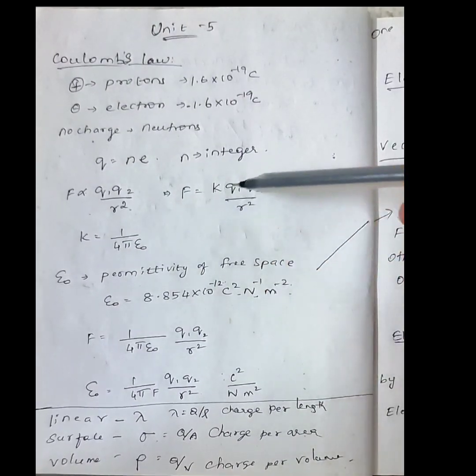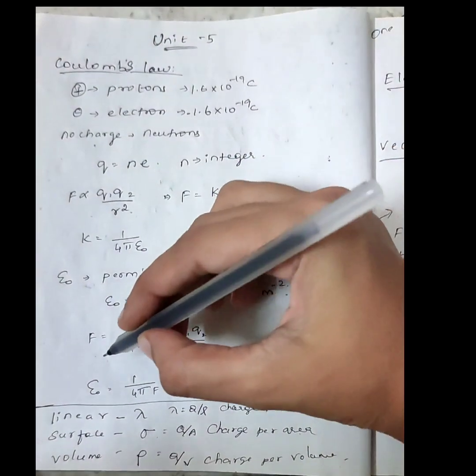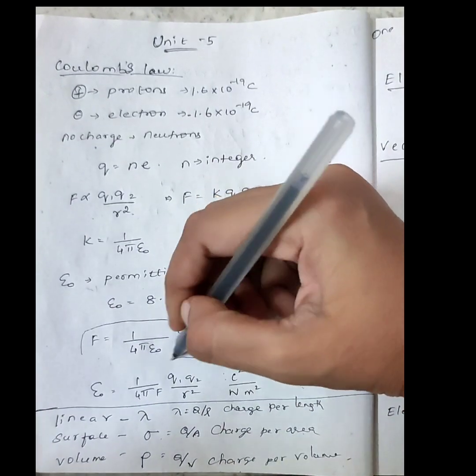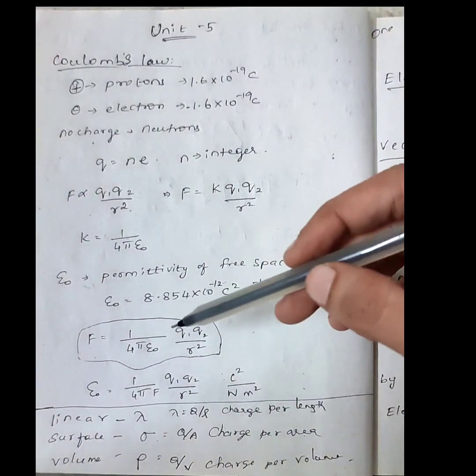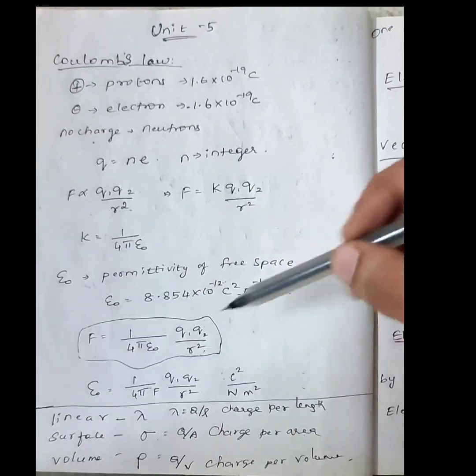Substituting the value of k, Coulomb's law becomes: F = (1 / 4πε₀) × (q₁q₂ / r²).